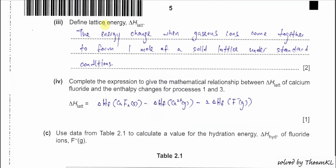Part B(iii): Define lattice energy. Lattice energy is the enthalpy change when gaseous ions come together to form one mole of solid ionic lattice under standard conditions. It must involve gaseous ions combining to form exactly one mole of solid lattice — that detail is very important.